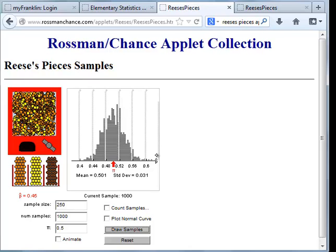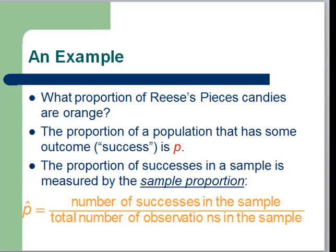These sample proportions are much closer than they were originally. They're in between 40% and 60% instead of 20% and 80%.